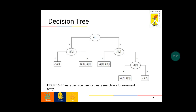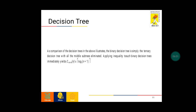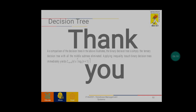This diagram shows the binary decision tree for binary search in a four element array. We compare the searching element with a[1]; if lesser we take a[0], if lesser we go beyond a[0], otherwise we take a[0] and a[1]. If greater than a[1] we take a[2]; if lesser we compare a[1] and a[2], if greater we take a[3], if lesser than a[3] we compare a[2] and a[3], otherwise we go beyond a[3]. The binary decision tree is simply the ternary decision tree with all middle subtrees eliminated. Applying this inequality to such binary decision trees yields C_worst(n) ≥ ceiling of log base 2 of (n plus 1).